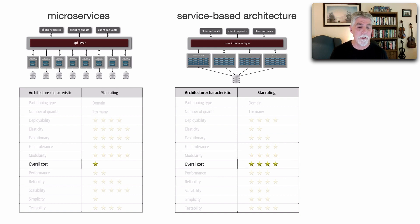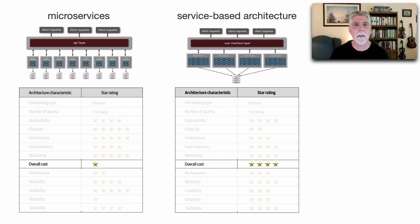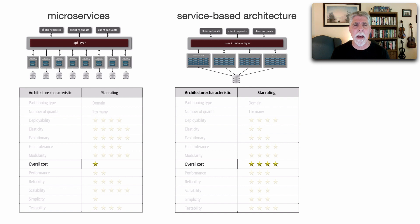Another significant difference is overall cost. Microservices is rated one star — meaning the cost is bad — whereas service-based gets four stars, meaning it's pretty good. Microservices is a very expensive architecture not only to develop or migrate to, but also to maintain. A lot of that cost comes from breaking apart databases, reorganizing team structures, embracing DevOps, operational automation, and associated licensing. In service-based architecture we don't have those costs, so it becomes a fairly inexpensive architecture both to migrate to and maintain.